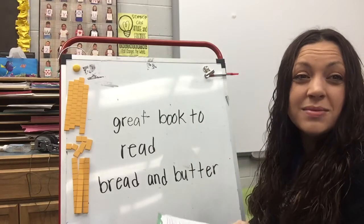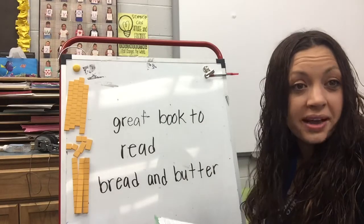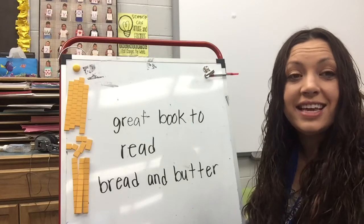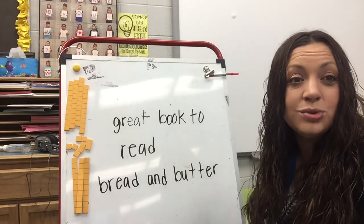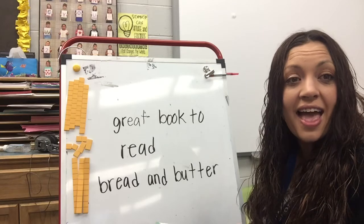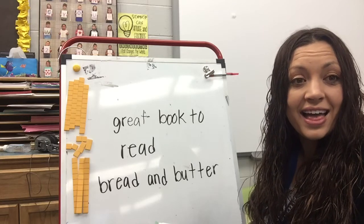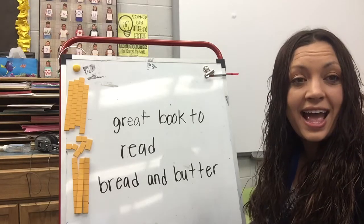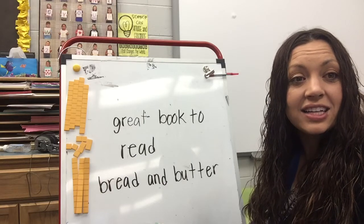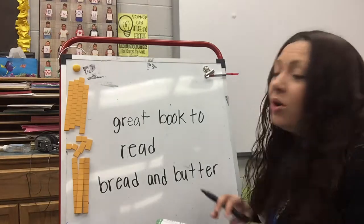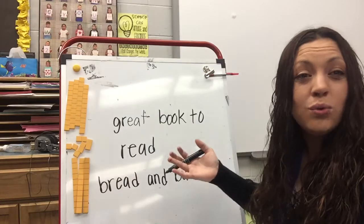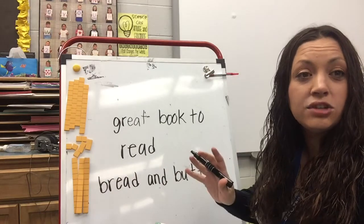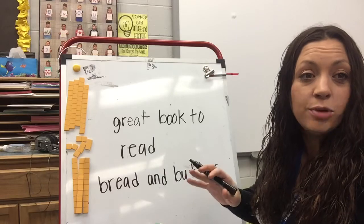Good morning, guys. Today we're talking about something that was a little bit confusing. We talked about yesterday that the E-A digraph can say long E. Today we learned that it can make two other sounds: it can say short E like in 'thread,' or it can also say long A like in 'stake.' There's really no rule for us to follow, so sometimes we just have to try it and see if it sounds right, and then we might have to go back and fix it.